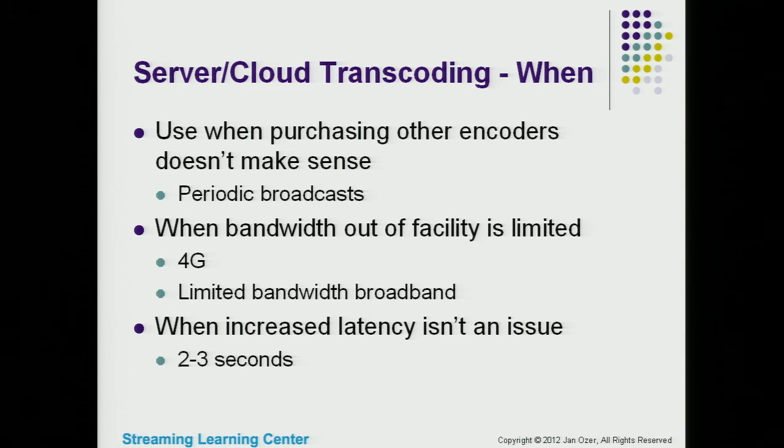When do you want to use this? If you have a periodic large event like the Super Bowl, you don't want to spend $40,000 on an encoding tool you'll use once a year — spinning up cloud transcoders makes a lot of sense if your broadcasting is episodic. Cloud transcoding also makes sense in facilities with limited outbound bandwidth. To create six streams, you might need 7-8 Mbps to push out. Most facilities don't have that — with a live transcoder you send one 3-4 Mbps stream, very high quality, and they transcode it for you.